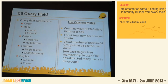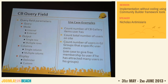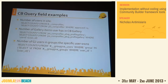Community Builder has a long list of field types, but you can extend them. One extension is the CB Query Field — install the plugin and create as many query fields as you want. Examples: count the number of CB Gallery items a user has and display it as a profile field; count the number of users on the site; filter users by similar email domain. The query can be internal — using the hash sign for the table prefix — or external, specifying a connection and prefix.